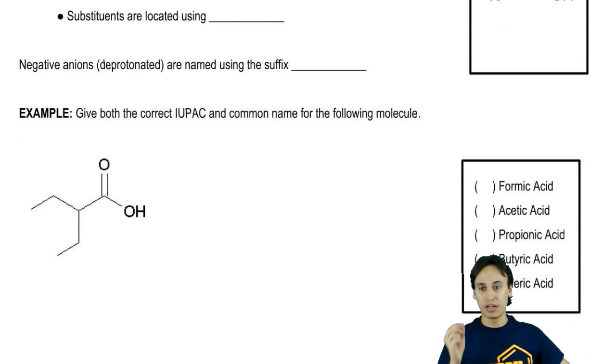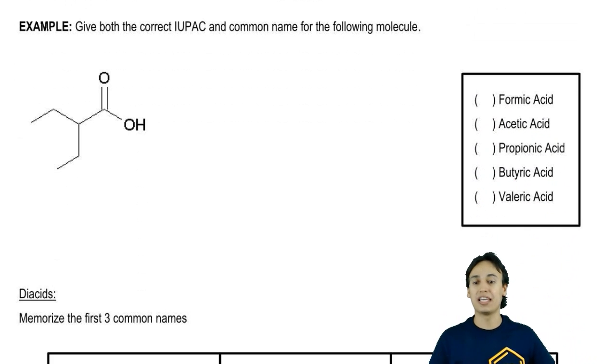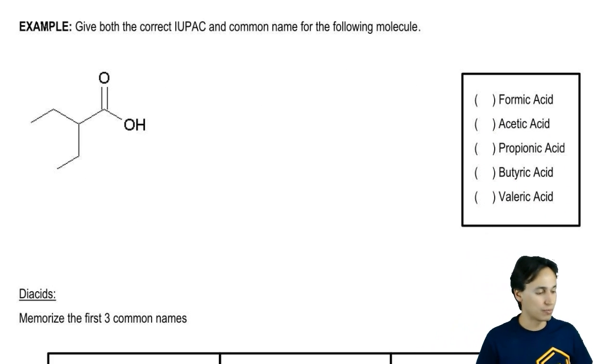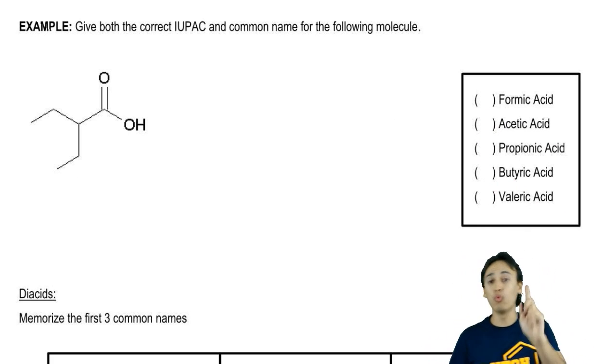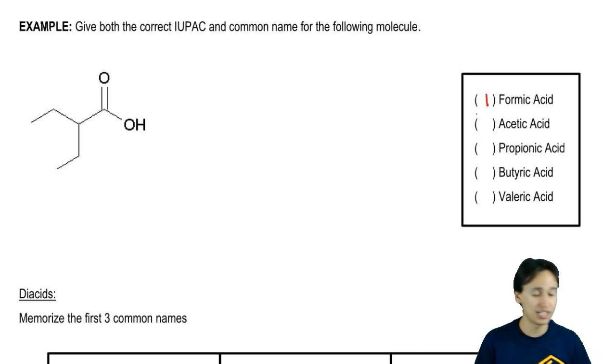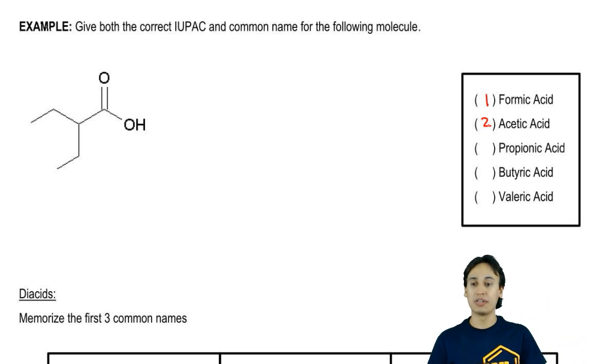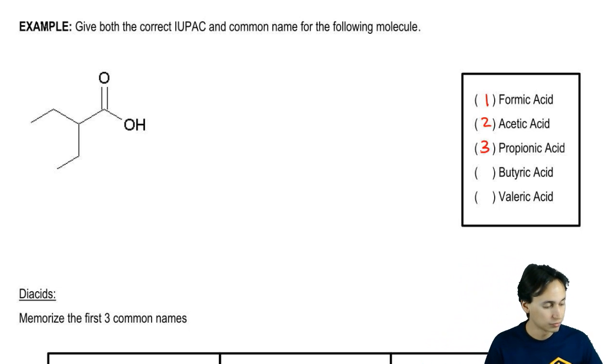Like acetic acid, we're going to need to learn these common names. The way that we name carboxylic acids with common names is by memorizing the first five common names. The common names have to do with how many carbons are in the chain. A one-carbon carboxylic acid is formic acid, a two-carbon is acetic acid, three carbons is propionic acid, four is butyric acid, and five is valeric acid.